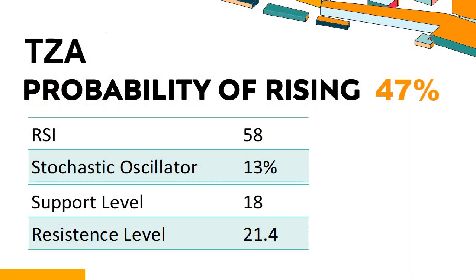What are the key technical signals for TZA performance? TZA's 14-Day Relative Strength Index (RSI) value was 58. When the RSI is between 50 and 70, it generally indicates that the stock is moderately bullish. This means the security's price has been rising but has not yet reached overbought levels, which are usually considered an RSI reading of 75 or higher.